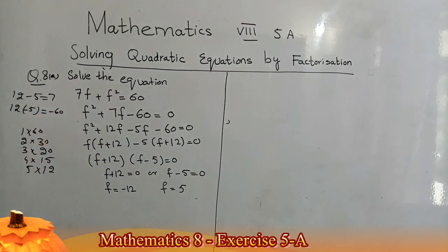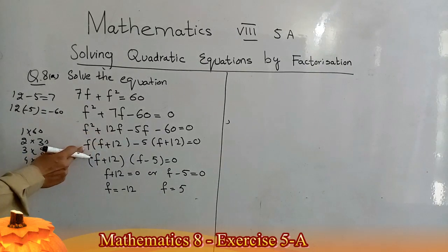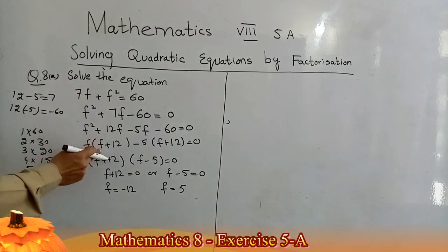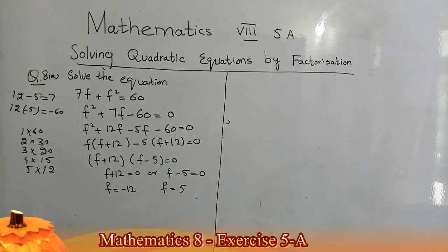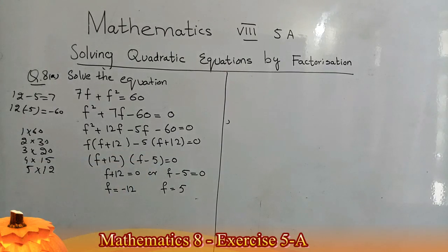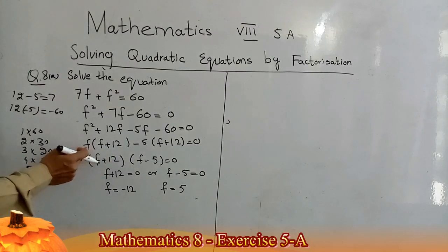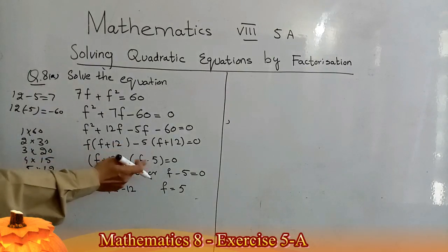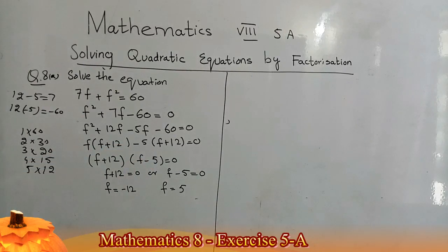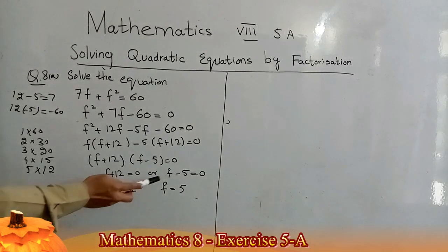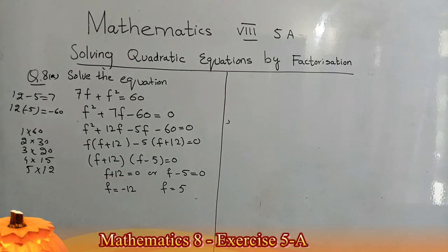I use 12 and −5 as coefficients of f: f² + 12f − 5f − 60 = 0. From the first two terms I take f as a common factor: f(f + 12). From the last two terms I take −5 as a common factor: −5(f + 12). Now (f + 12) is common, giving (f + 12)(f − 5) = 0. Either f + 12 = 0 giving f = −12, or f − 5 = 0 giving f = 5.